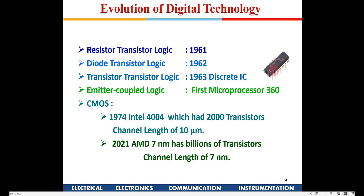These chips are used for realizing small functions on a PCB and are pretty cheap. After that came ECL logic. The first Intel microprocessor, the 360, was based on this emitter-coupled logic. These first four logic families were all bipolar junction transistor based.